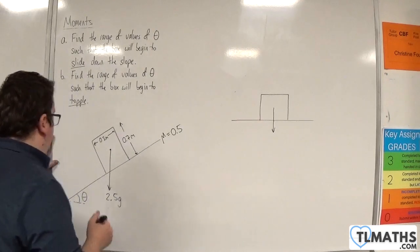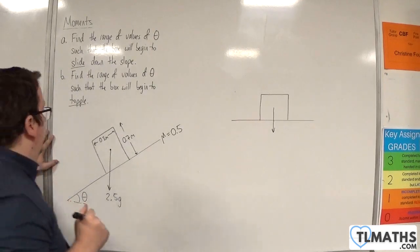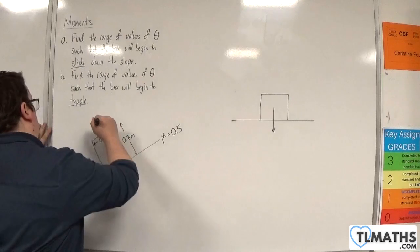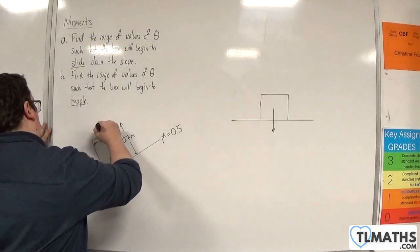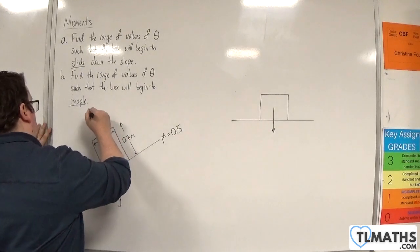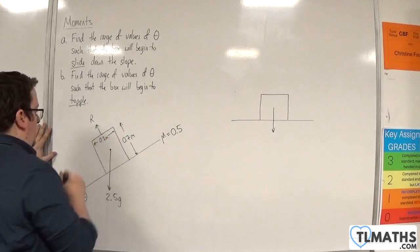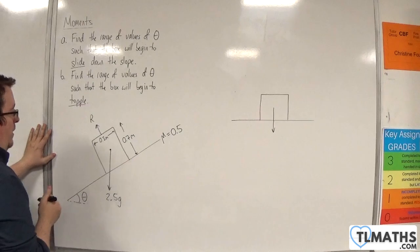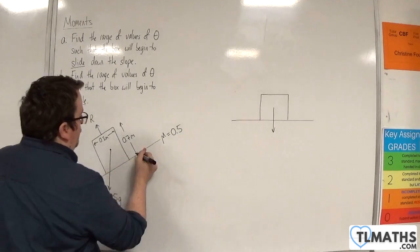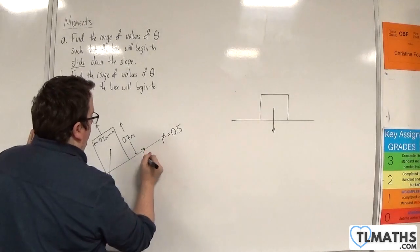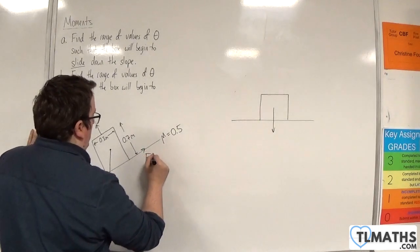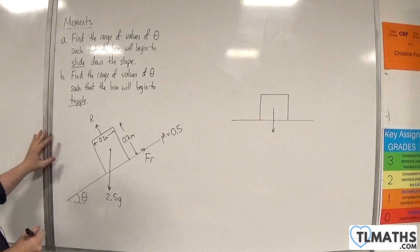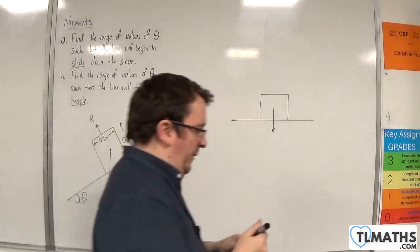We also have a normal reaction force R, and we're going to have a frictional force Fr, acting up the slope.